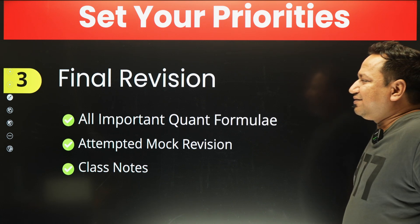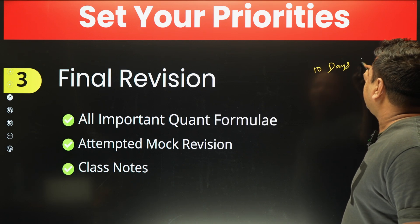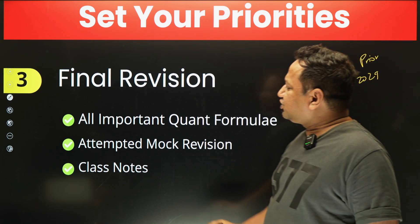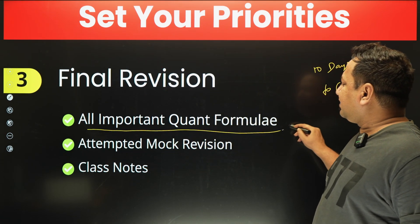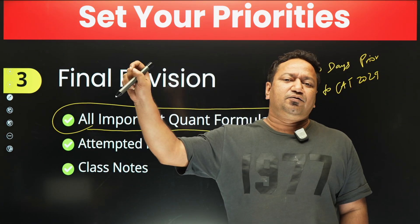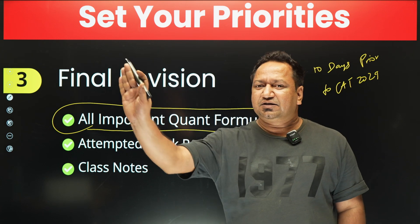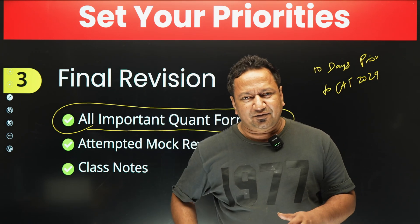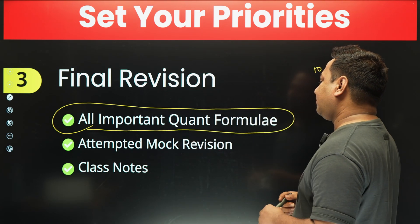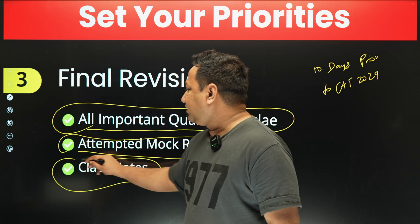Final revision. In the end, final revision should be done in the last 10 days before CAT 2024. You should have a complete note of all important quant formulae. By the way, we have compiled one — go to the iQuanta website, at the top you'll find a download formula book option. Or if you want to create your own formula book, just write things down, paste them on the wall, or make a short notebook you can carry anywhere. Also, revising the mocks you've already attempted is necessary in the last 10 days, as is revising your class notes. The order is: first class notes, then attempted mock revision.